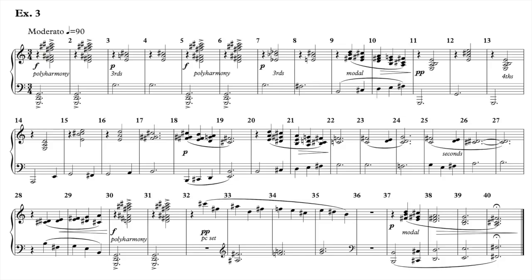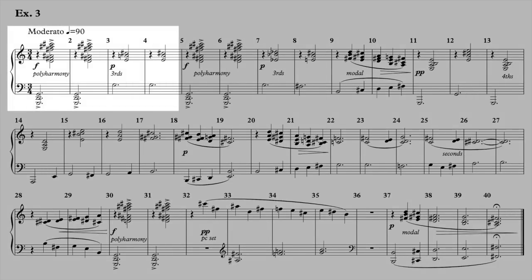I'll show you the details in each case of how it works. We start off with this polyharmony chord at the beginning, which is repeated. Then in measure three — what's the connection between measures one and two and measure three? Well, the left-hand note is the same G, just moved up an octave. The top note is the same also — it's C sharp, just moved out of the octave.